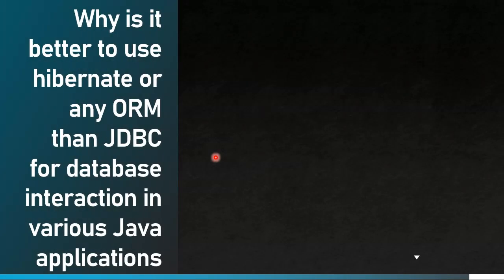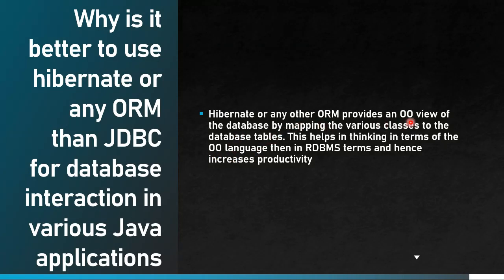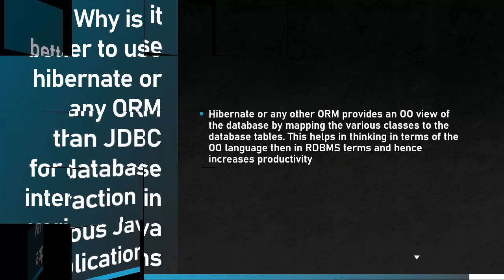Next question: is it better to use Hibernate or any JPA ORM than JDBC for database interaction? Hibernate or any ORM framework provides an object-oriented view of the database by mapping classes to database tables. This helps in thinking in terms of object-oriented language rather than RDBMS terms, increasing productivity. We just need to take care of correct mapping, and the ORM will generate the respective DB queries and execute them.